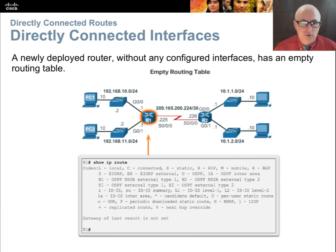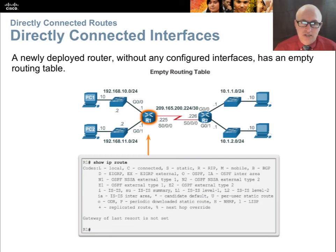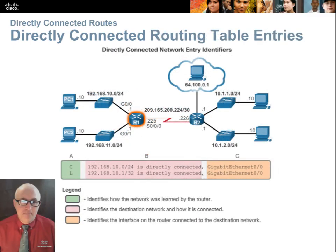When you first look at a routing table on a blank router, there's nothing — an empty routing table. There won't be any routes until you put IP addresses on your interfaces. Each interface with an IP address and no-shutdown status will appear. You'll notice C and L entries that both define the same directly connected interface: C is the interface IP address, and L is the network ID for the interface — the subnetted network — so they're listed there with a subtle difference in the IP addresses.